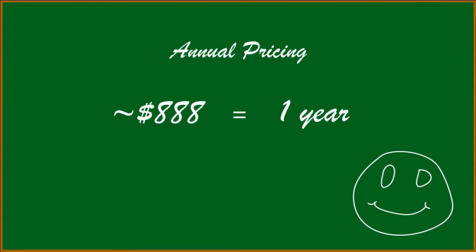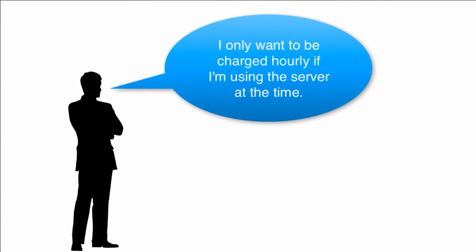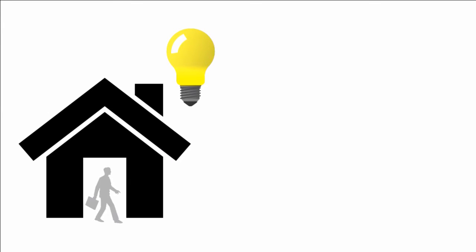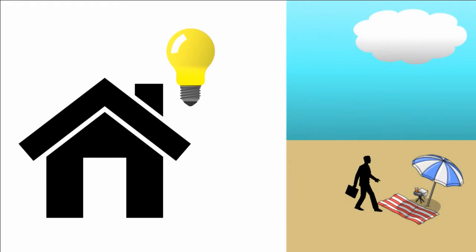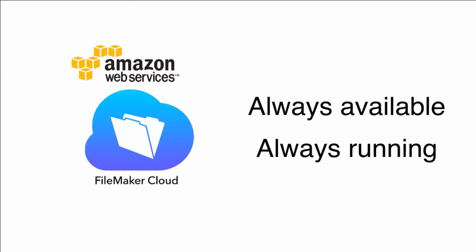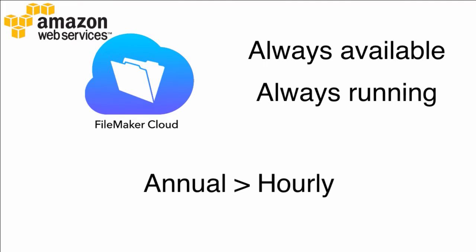Something else that's really important to understand: people say they want to use hourly so they're only charged when they use FileMaker server. But the billing systems at Amazon and FileMaker Cloud do not work on the basis of you only being billed when you use the software. FileMaker Cloud is a lot like having lights at your house — if you turn a light on and leave for vacation, that light is still on and you're still being billed. By spinning up FileMaker Cloud, it's always available and always running, whether you're using it or not, so you're going to be billed for it. It's much better to get on an annual program.